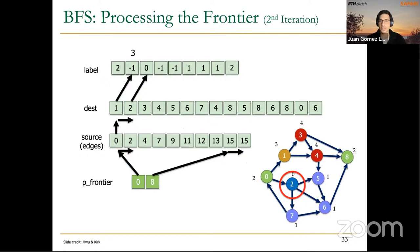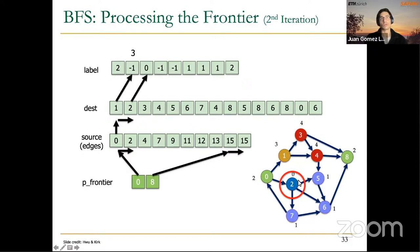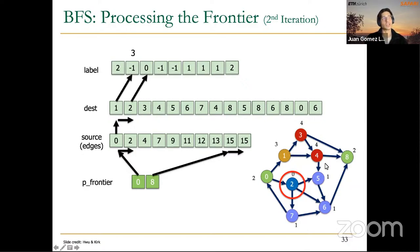Let's start thinking about how to use the data structures representing the graph when applying the BFS algorithm. Imagine we have the same simple graph and we are now processing frontier number 2. In the beginning, we were at node 2 and discovered its direct neighbors: 5, 6, and 7 — the first frontier. Right after that, we go to the second frontier containing nodes 0 and 8. So at the start of the second iteration, the input frontier has only two nodes: node 0 and node 8.